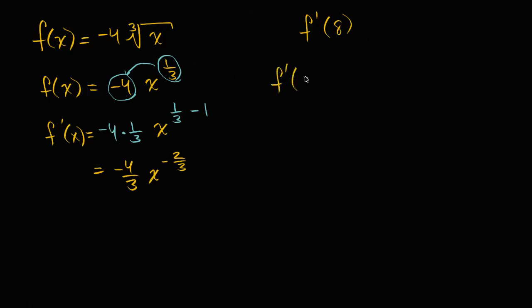And so if we want to evaluate f'(8), f'(8) is equal to -4/3 times 8 to the -2/3 power. Well that's the same thing as -4/3 times 8, 8 to the 1/3 and then raise that to the -2 power. I'm just using exponent properties here.